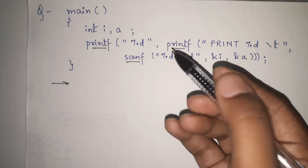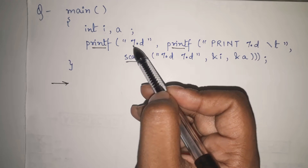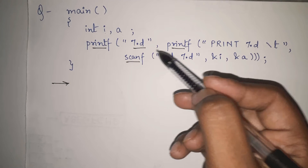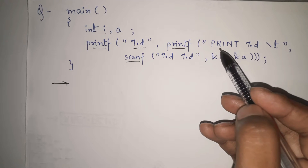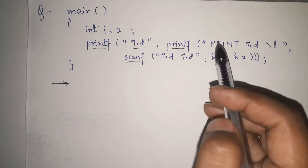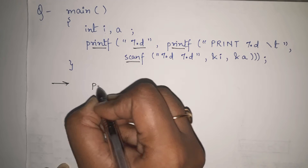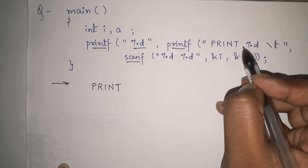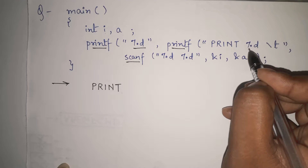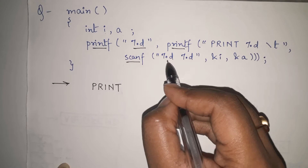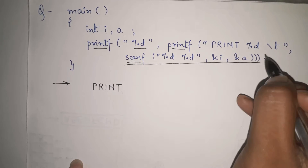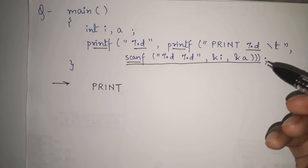To solve such examples you should know how nested printf and nested scanf work. First, printf is printing %d — that means one integer will be printed. But which integer? Inside, we have another printf printing %d. So the outer 'print' string is printed as-is, but we don't yet know what replaces that outer %d. Moving forward, inside we have scanf("%d %d", &i, &a).